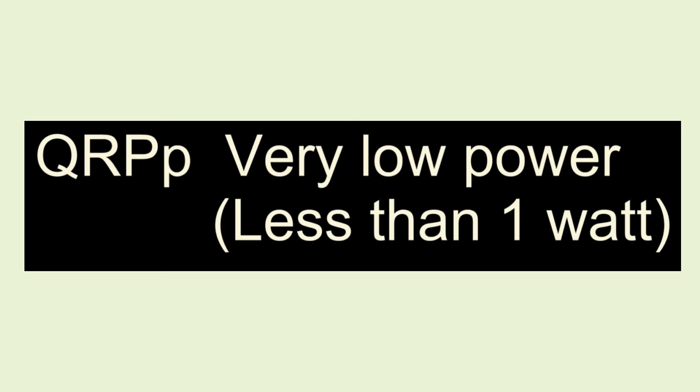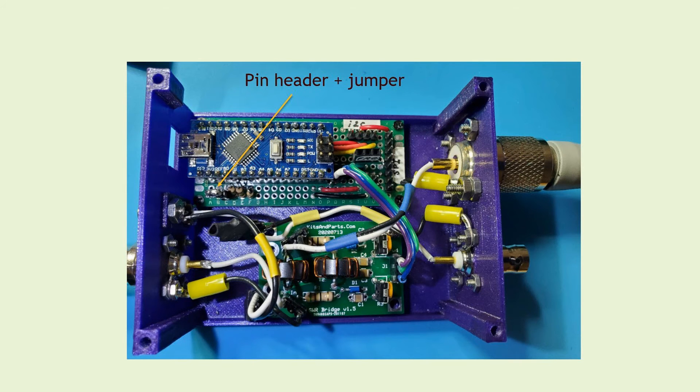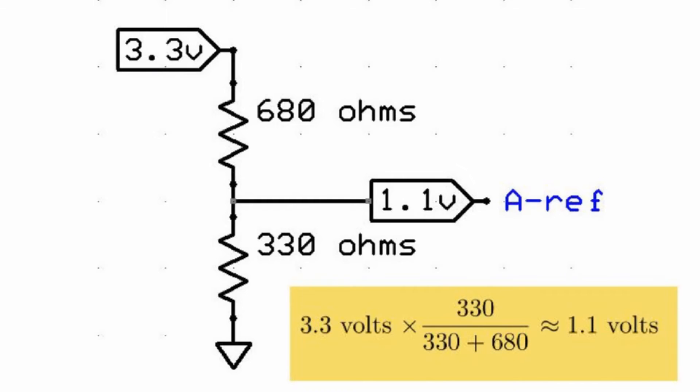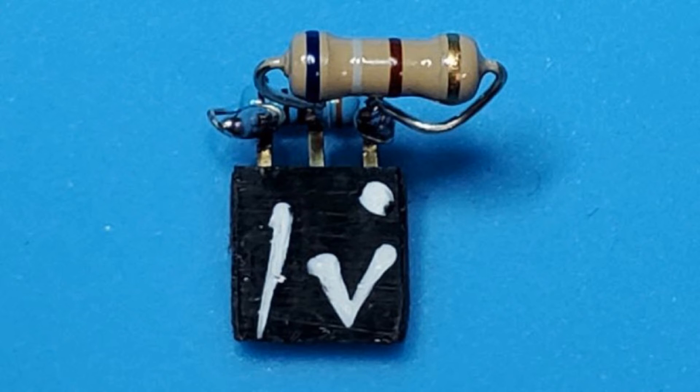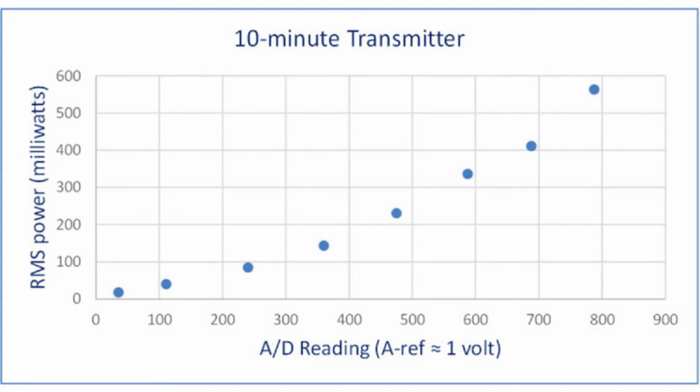To facilitate changing to the very low power, called QRP sub-P, I installed a pin header for the analog reference, or AREF, and also added pins for 3.3 volts and ground, so that it would be possible to plug in different voltage dividers to make different reference ranges.